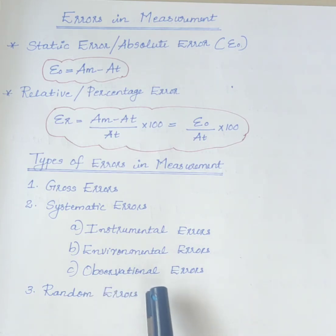Next is observational errors. Such errors are introduced by the observer. The most common error is the parallax error introduced in reading a meter scale. These errors can be avoided by providing a mirror beneath the scale at a knife-edged pointer.